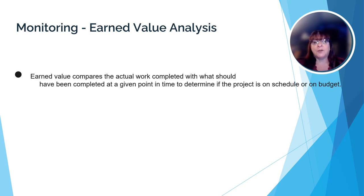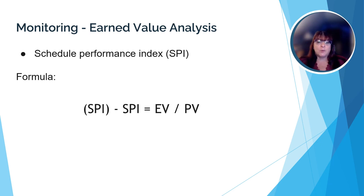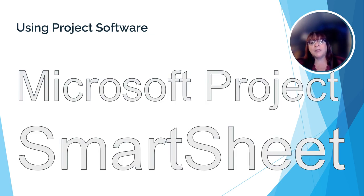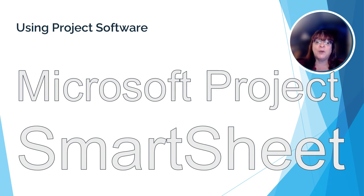One of the most important reports that a project manager can use is the earned value analysis. The earned value analysis is a series of calculations that compare planned and actual costs and work performed. Project managers will use the schedule performance index, or SPI, to determine if a project is on schedule, and the cost performance index, or CPI, to determine if a project is on budget. Luckily, there is an easy way for project managers to calculate these numbers for reports for their stakeholders. Project management software such as Microsoft Project or Smartsheet — or really any number of other project management software programs — have all of the SPI and CPI calculations built into them. All the project manager has to do is load the data into the program, and the program will do the math and produce a variety of reports the project manager can then use to share information with the stakeholders.